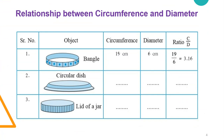Now there is a relationship between circumference and diameter. You see this particular table on the screen. There are three objects mentioned over here. The first one is a bangle — I have measured its circumference and it is 19 cm and diameter is 6 cm. Now I just wish to divide and see what I get.